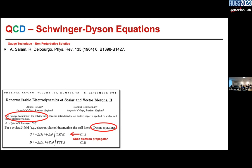One of the very first studies of Schwinger-Dyson equations were carried out by the founder of the standard model of particle physics, Abdus Salam, along with his student Robert Delbourgo, in the 1960s. This is the Schwinger-Dyson equation for the electron propagator and the photon propagator. They used a technique called the gauge technique, where you write the propagator and vertices in terms of spectral densities, and then try to find a solution for those spectral densities.